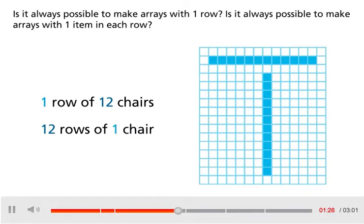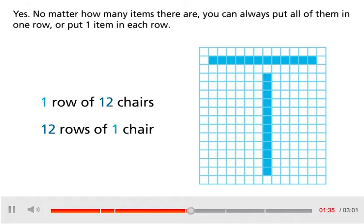Is it always possible to make arrays with 1 row? Is it always possible to make arrays with 1 item in each row? Yes. No matter how many items there are, you can always put all of them in 1 row or put 1 item in each row.